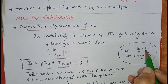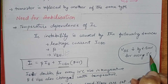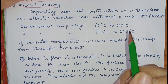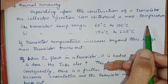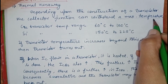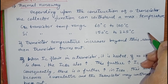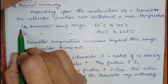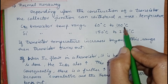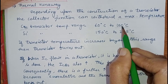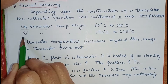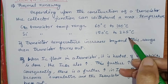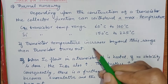VBE decreases by 2.5 mV for every 1°C rise in temperature. The third factor is thermal runaway. Depending on the construction of the transistor, every transistor has a maximum temperature range. The range for a germanium transistor is 60°C to 100°C — if the temperature goes beyond this range it may burn out. For a silicon transistor, the range is 150°C to 225°C, and if the temperature goes beyond these ranges, the transistor may burn out.